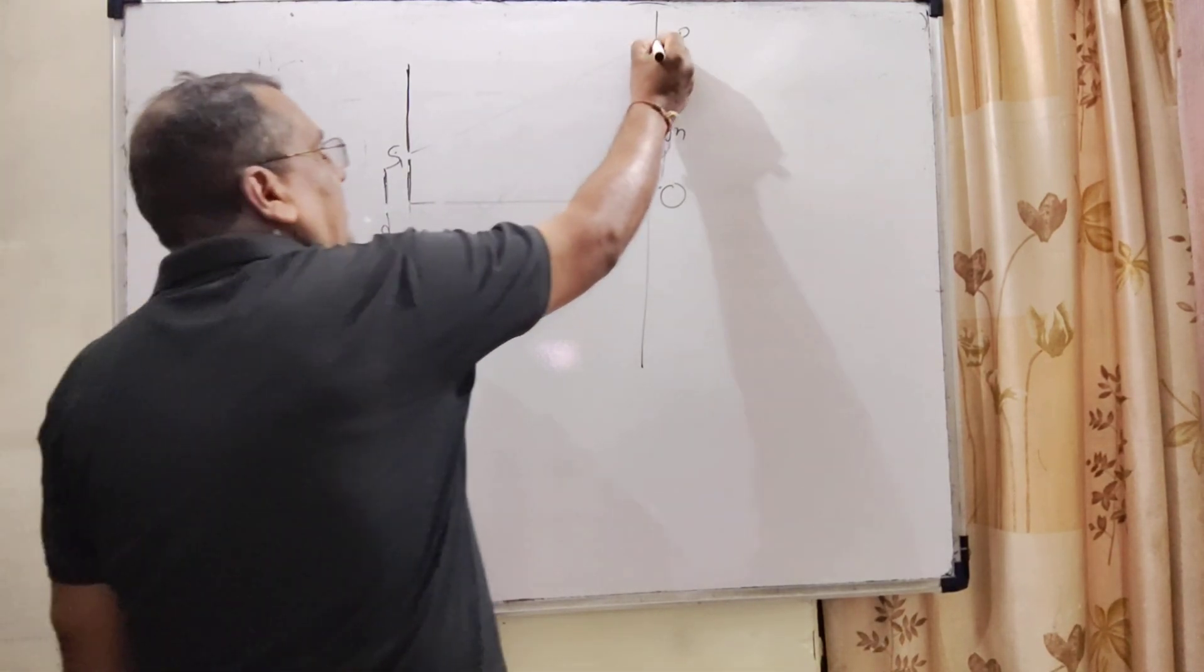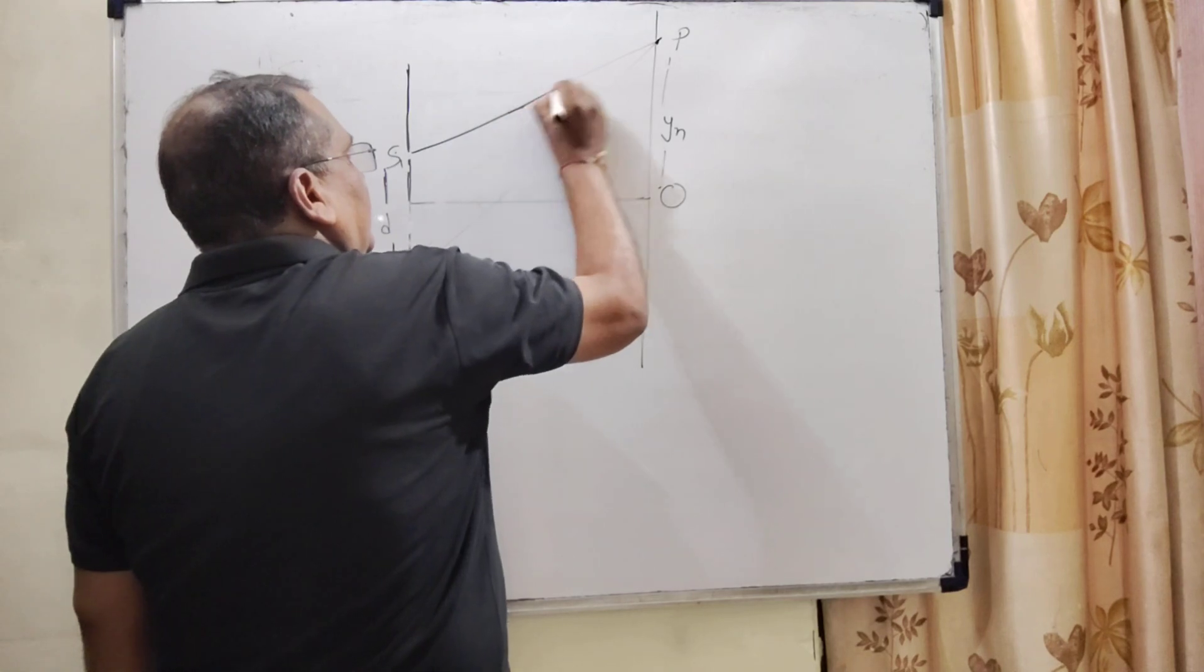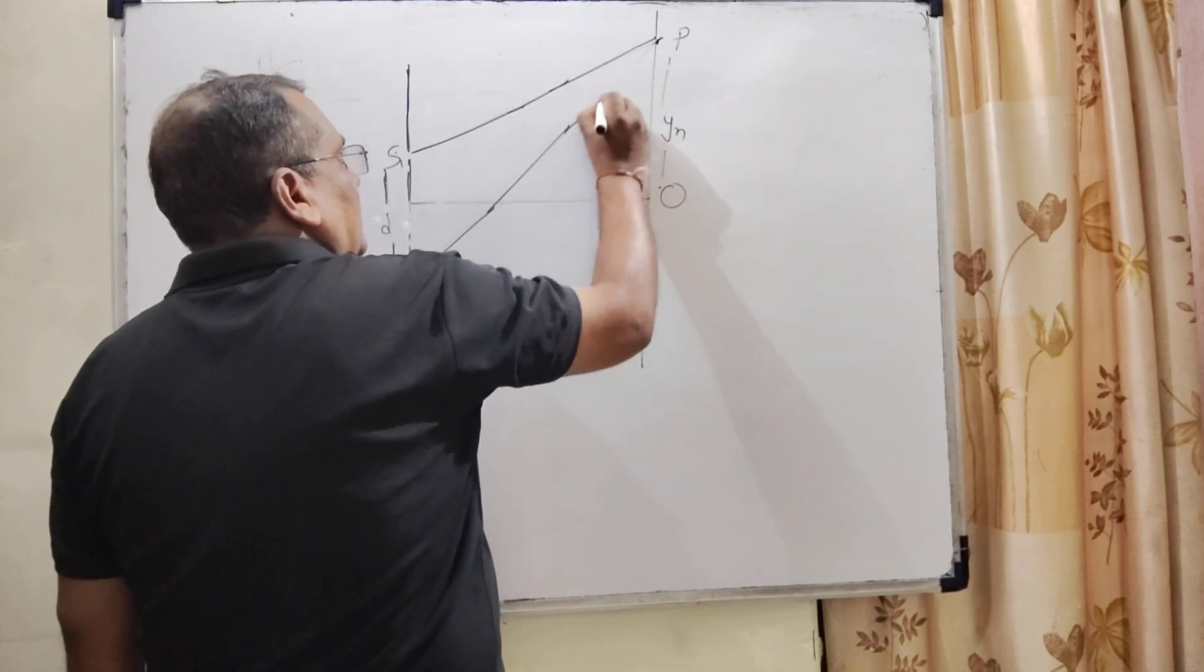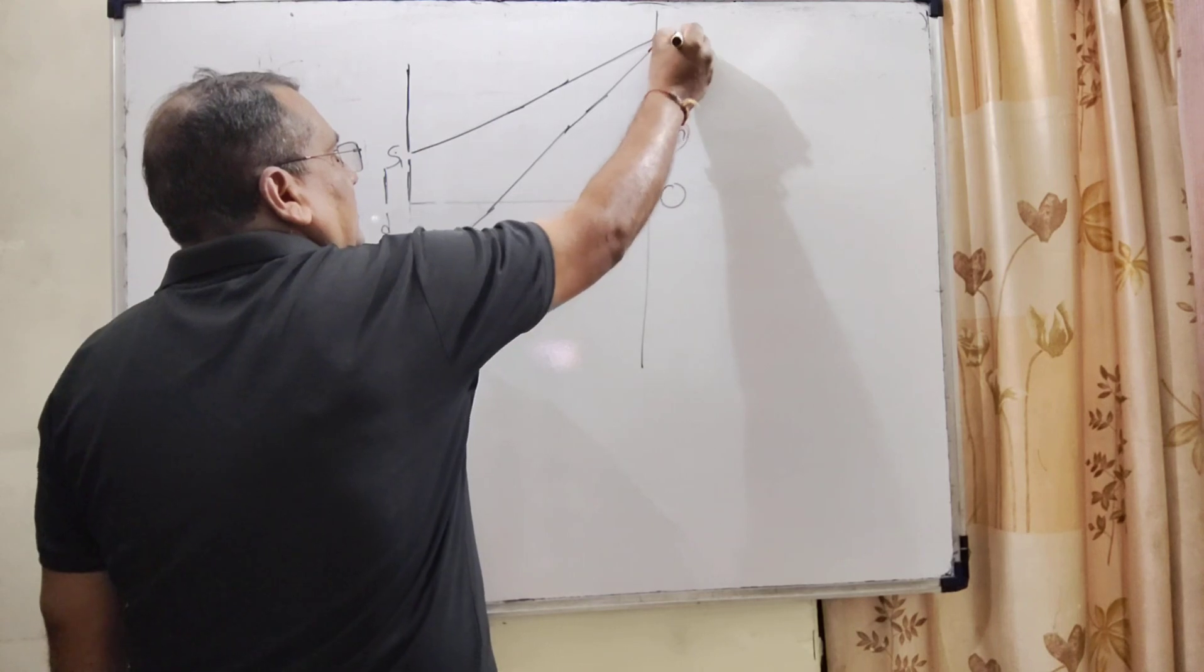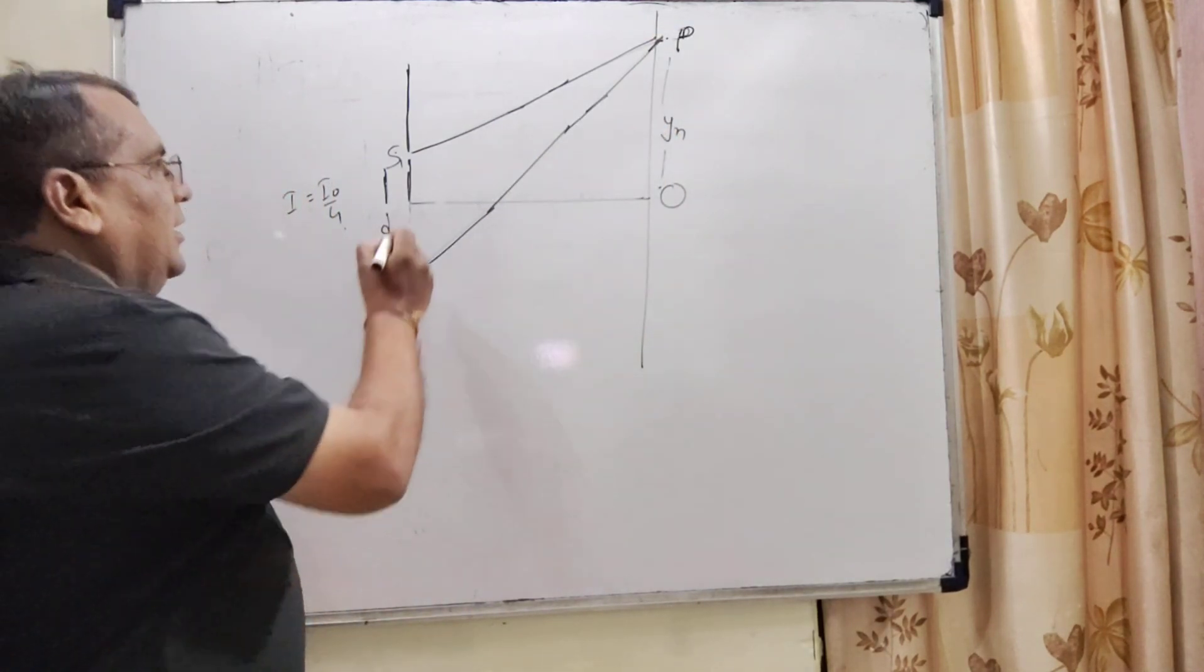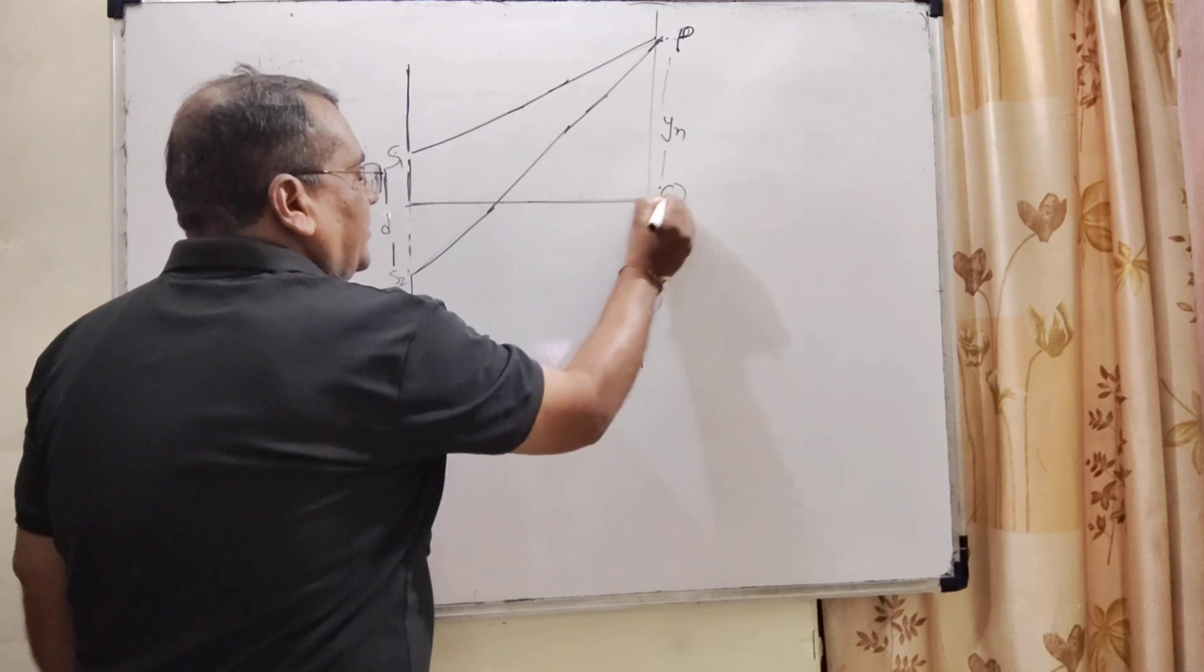And here the point P where the ray from S1 reaches to P and S2 reaches to P. And here the central maxima is formed at O.